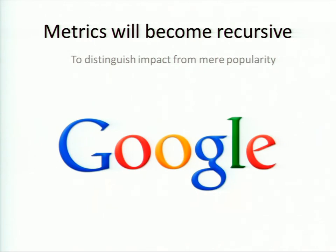People often ask me: with audience metrics or even citation metrics, how do you distinguish just popularity from actual impact? It's a really good question. A paper might have a lot of citations, but another paper might have half as many citations from much more prestigious academics. The way to solve that is how Google has solved this problem for links on the web — making the algorithm recursive. You look at who's citing your work, who's linking to your work, who's reading your work. Every single peer review metric I've talked about — recommendations, citations, audience metrics, comment metrics — are all susceptible to a kind of weighting and recursiveness.